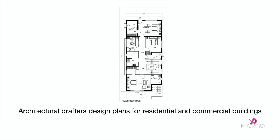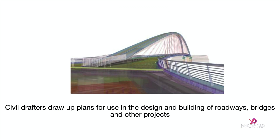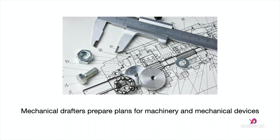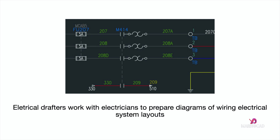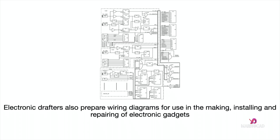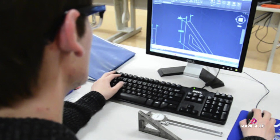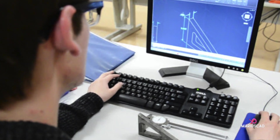Architectural drafters design plans for residential and commercial buildings. Civil drafters draw up plans for roadways, bridges, and other projects. Mechanical drafters prepare plans for machinery and mechanical devices. Electrical drafters work with electricians to prepare diagrams of wiring and electrical system layouts. Electronic drafters also prepare wiring diagrams for use in the making, installing, and repairing of electronic gadgets.